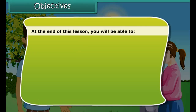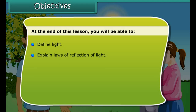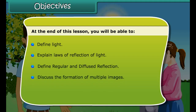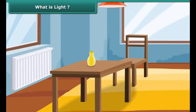At the end of this lesson, you will be able to: define light, explain laws of reflection of light, define regular and diffused reflection, discuss the formation of multiple images, describe the working of a Kaleidoscope, and discuss dispersion of light.